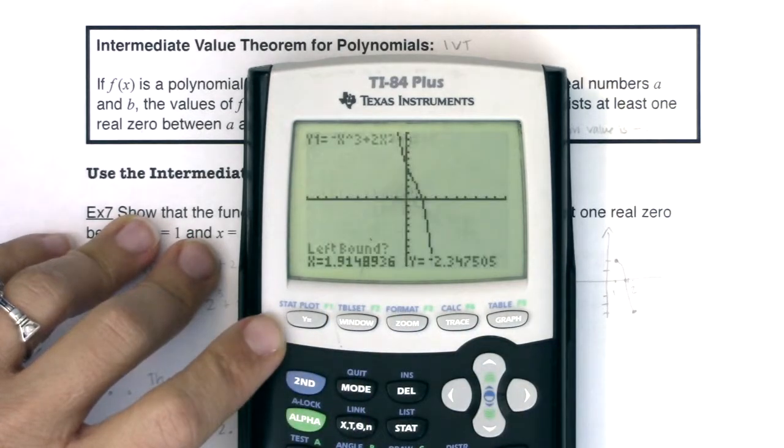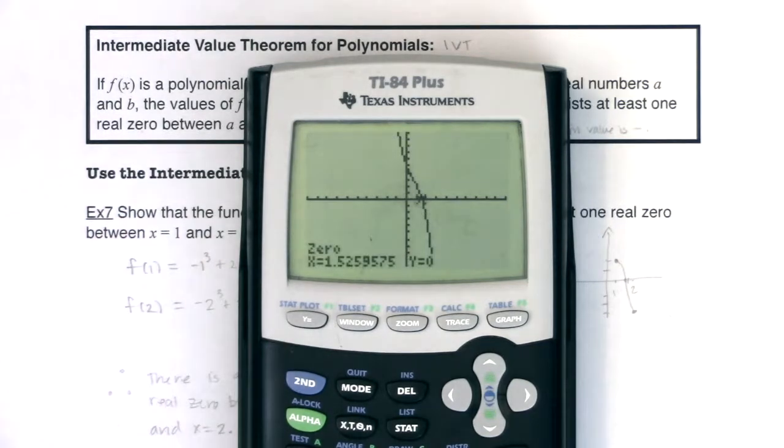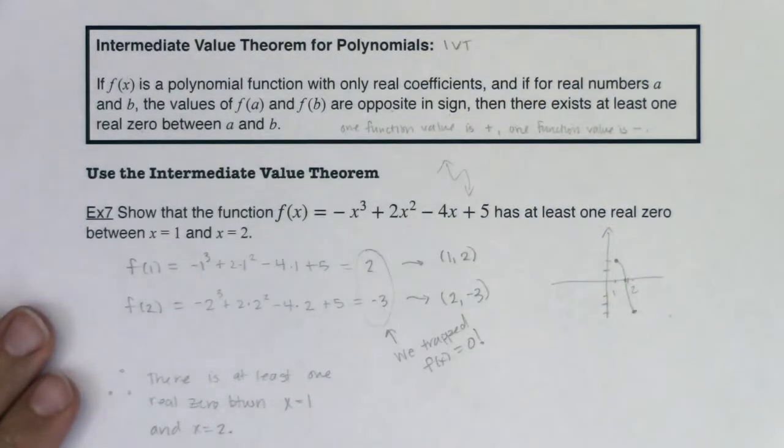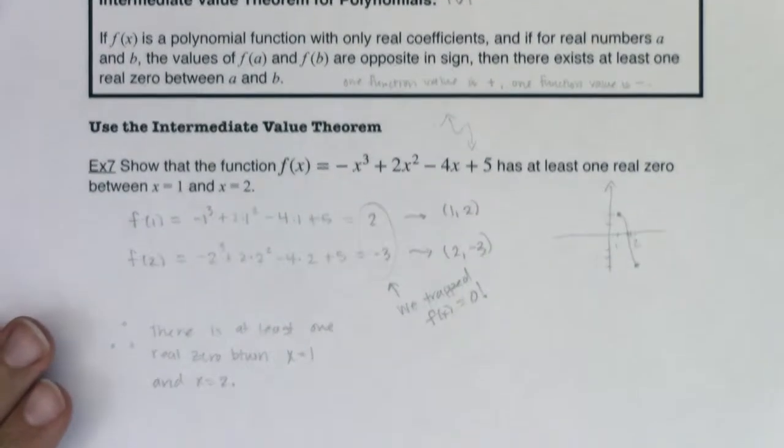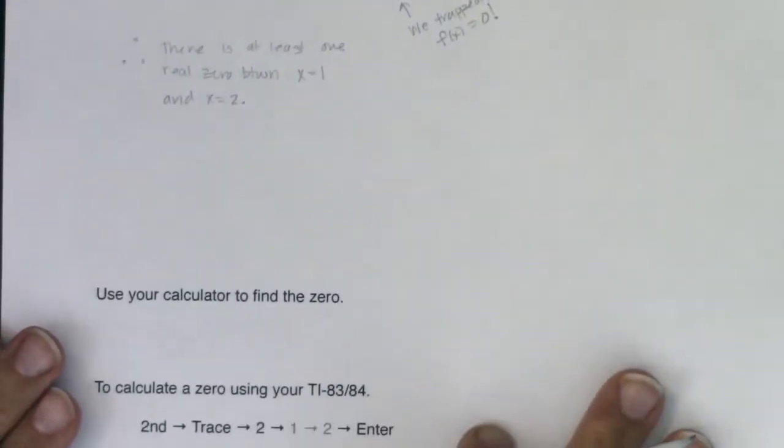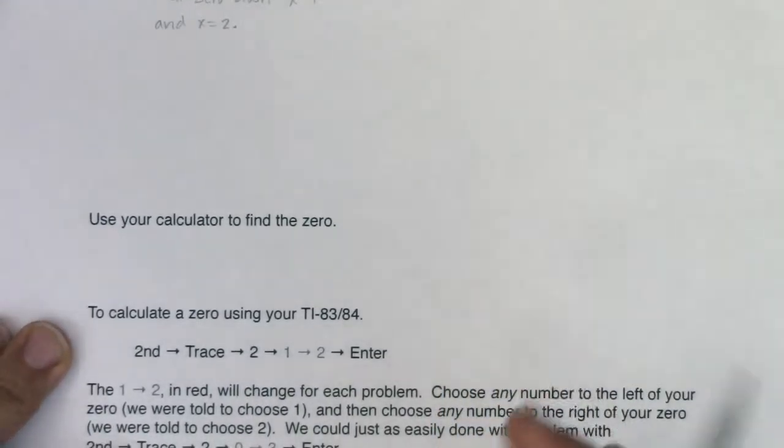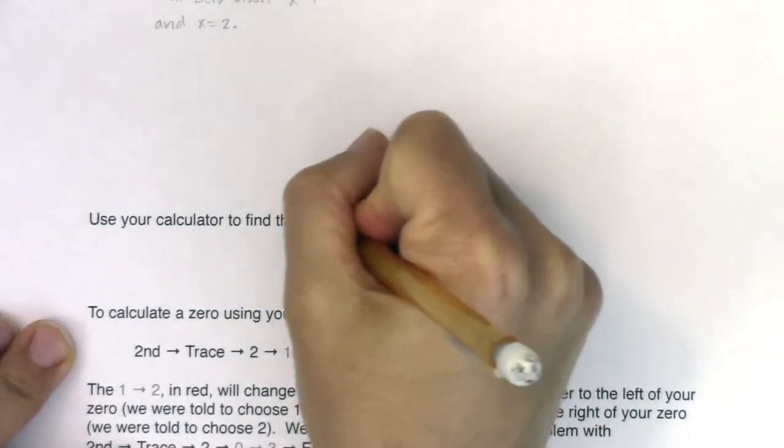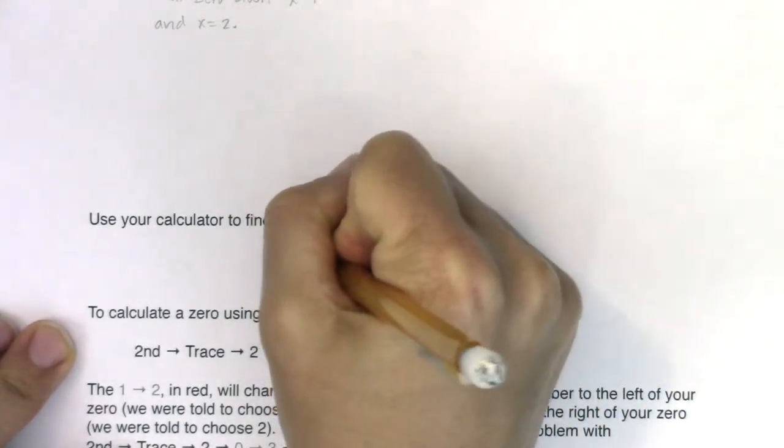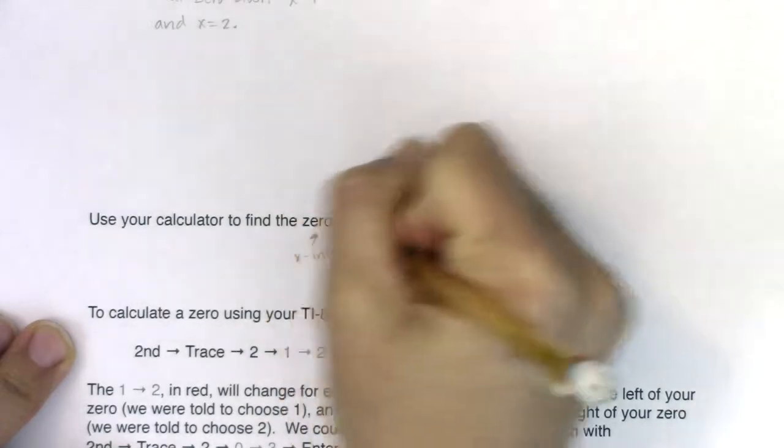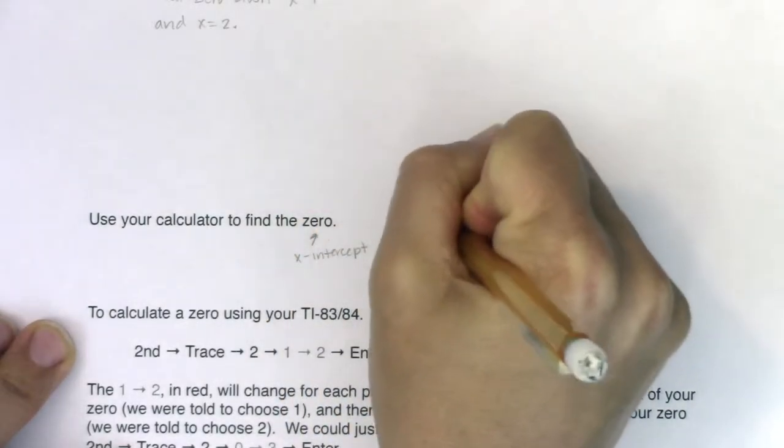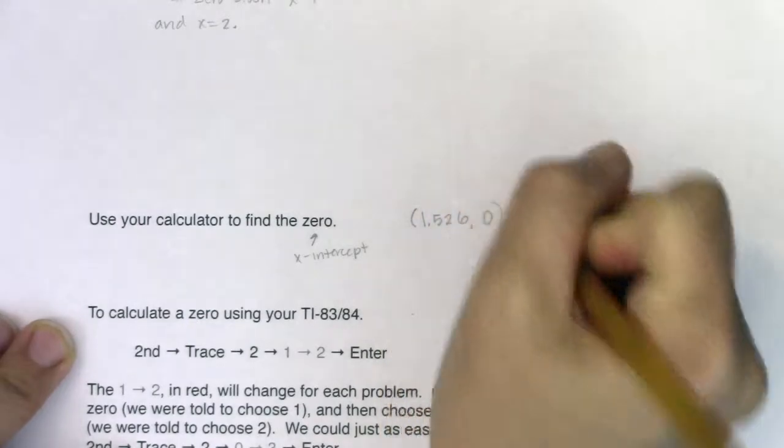If you wanted to actually calculate that zero, you can do second trace and option 2. You know you have a left bound of 1, a right bound of 2. And our actual real zero was at 1.526, 0. That was the last question. I kind of tacked it on at the end here. So you see me saying, hey, use your calculator to calculate your real zero. And again, a zero, it's another word for an x-intercept. But if it's an x-intercept, you owe me an ordered pair. So that was (1.526, 0).